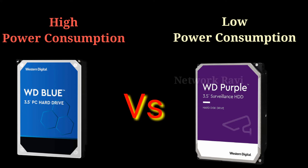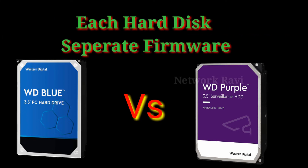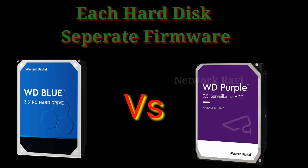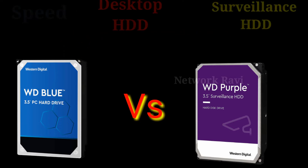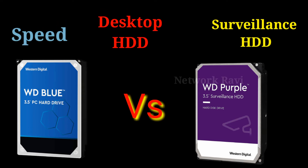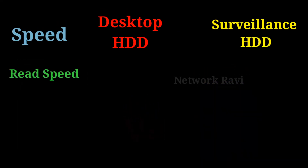This is the surveillance camera. This is the firmware. This is the firmware. This is the design. This is the hard disk — and this is the desktop hard disk for comparison.